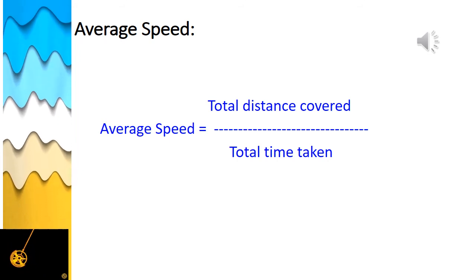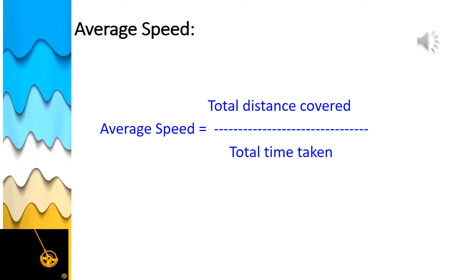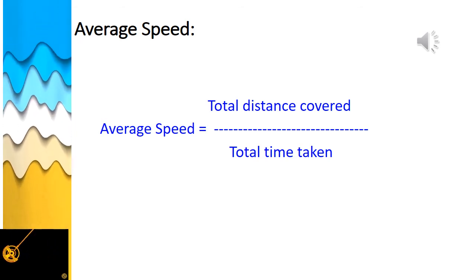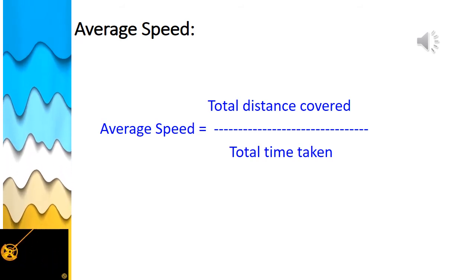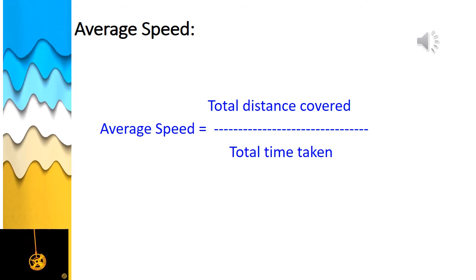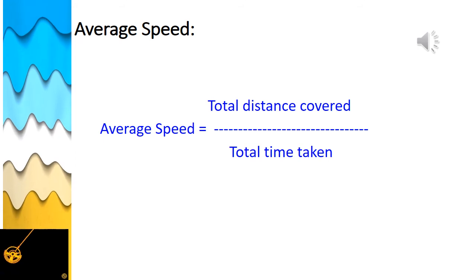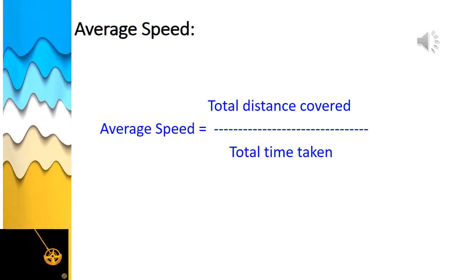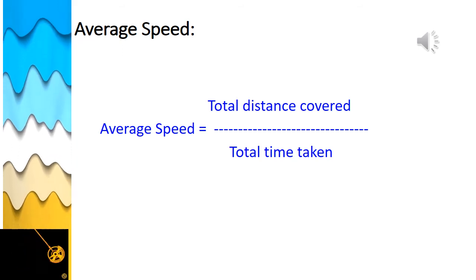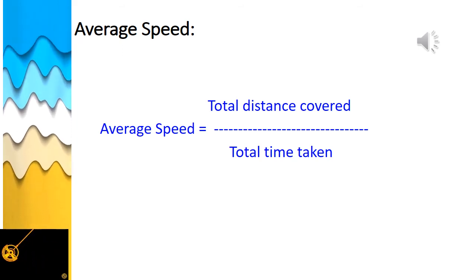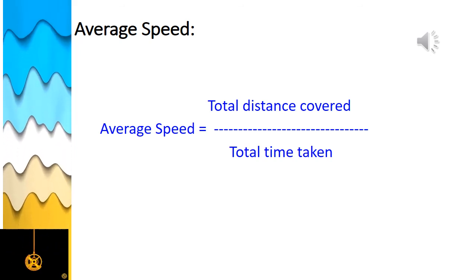The speed of a vehicle may change over a period of time due to many factors such as traffic jams, heavy traffic, or traffic signals. Therefore, to calculate the speed of a vehicle, average speed is used. Average speed is calculated by dividing the total distance covered by the total time taken. The formula is: average speed = total distance covered / total time taken.